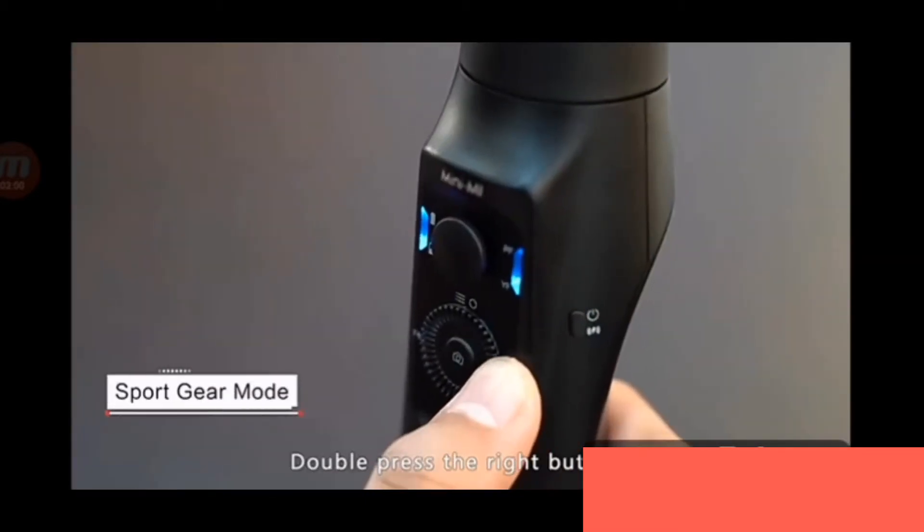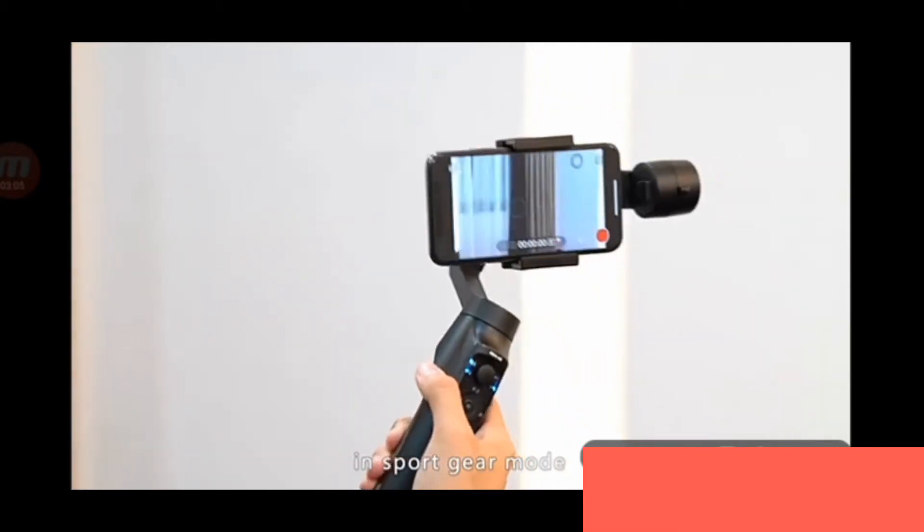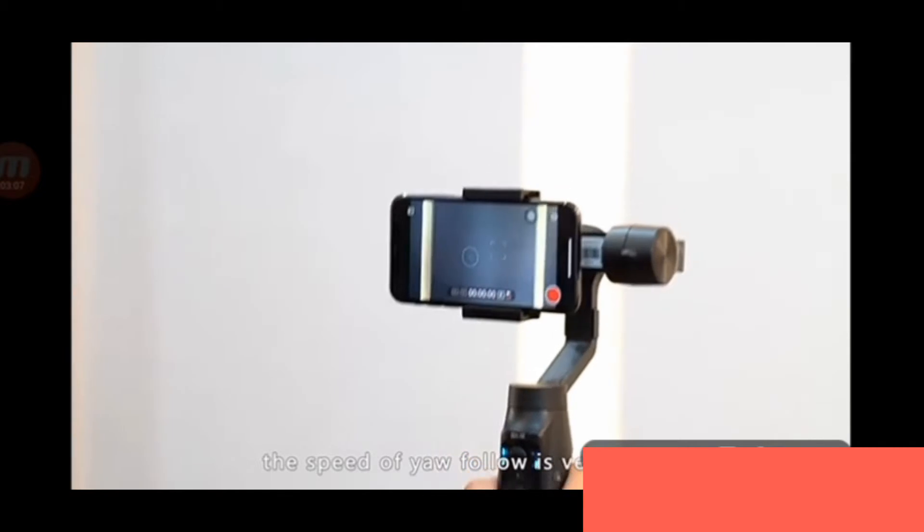Sports gear mode: double press the right button on the dial wheel to switch to sports gear mode. In sports gear mode, the speed of the yaw follow is very fast.